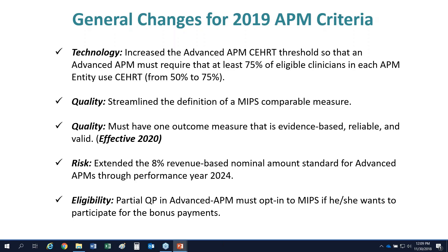Starting in 2020, CMS will require at least one outcome measure that is evidence-based, reliable, and valid. This does not significantly affect MSSP or current ACO programs, which already have outcome measures. CMS is really lining up for other payer models coming in where they haven't had control over what those metrics are. Risk acceptance will continue at at least 8% revenue-based nominal amount for advanced APMs, extended until 2024.